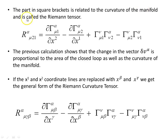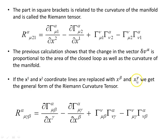The part in square brackets is related to the curvature of the manifold and is called the Riemann tensor. The change in the vector delta v_alpha is proportional to the area of the closed loop (delta A times delta B) as well as the curvature of the manifold given by the Riemann tensor. Generalizing from x1 and x2 to any directions x_beta and x_gamma gives the general form of the Riemann curvature tensor, which gives us the curvature of the manifold. In Euclidean space this is all zero, but otherwise it describes a curved manifold.